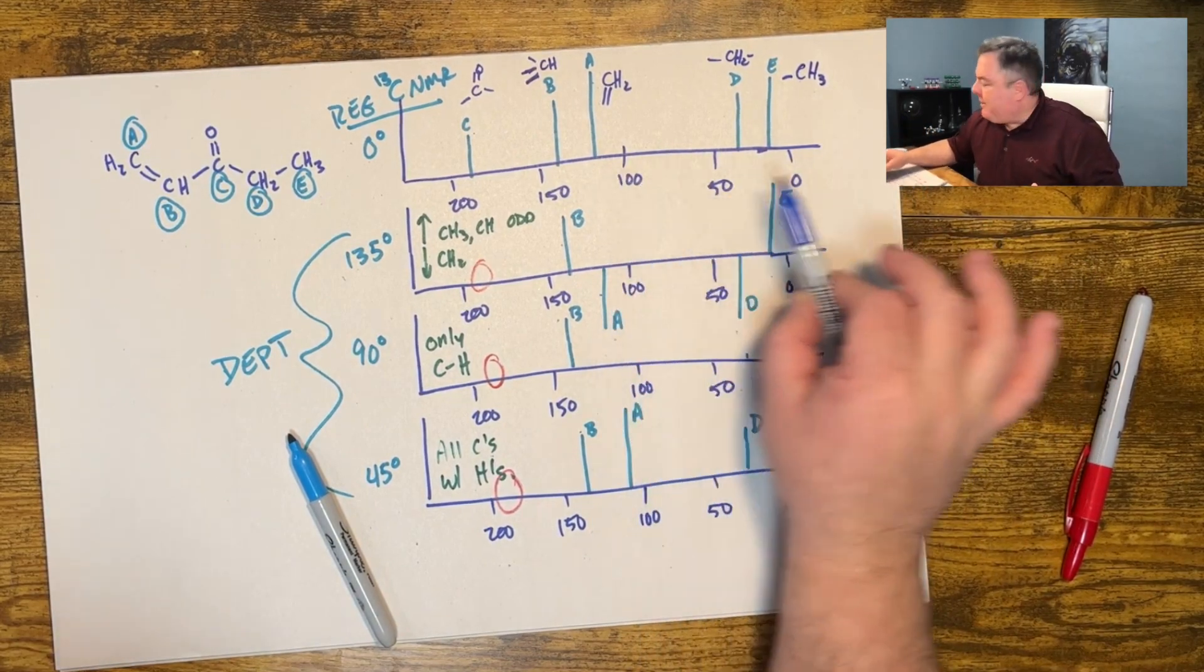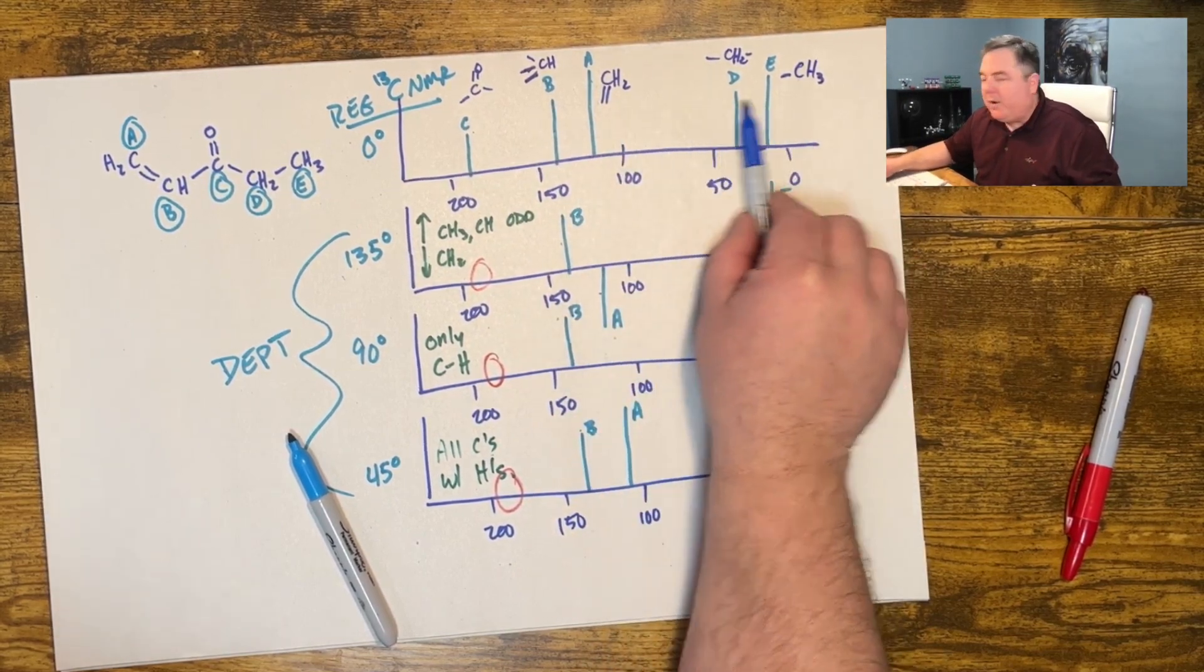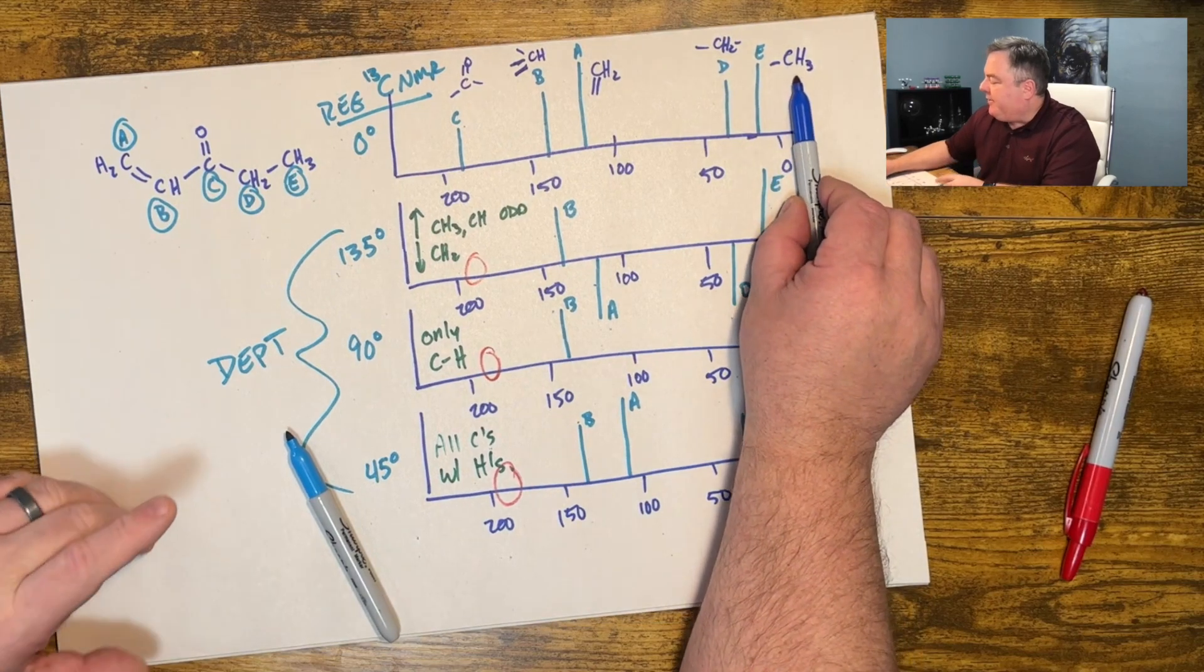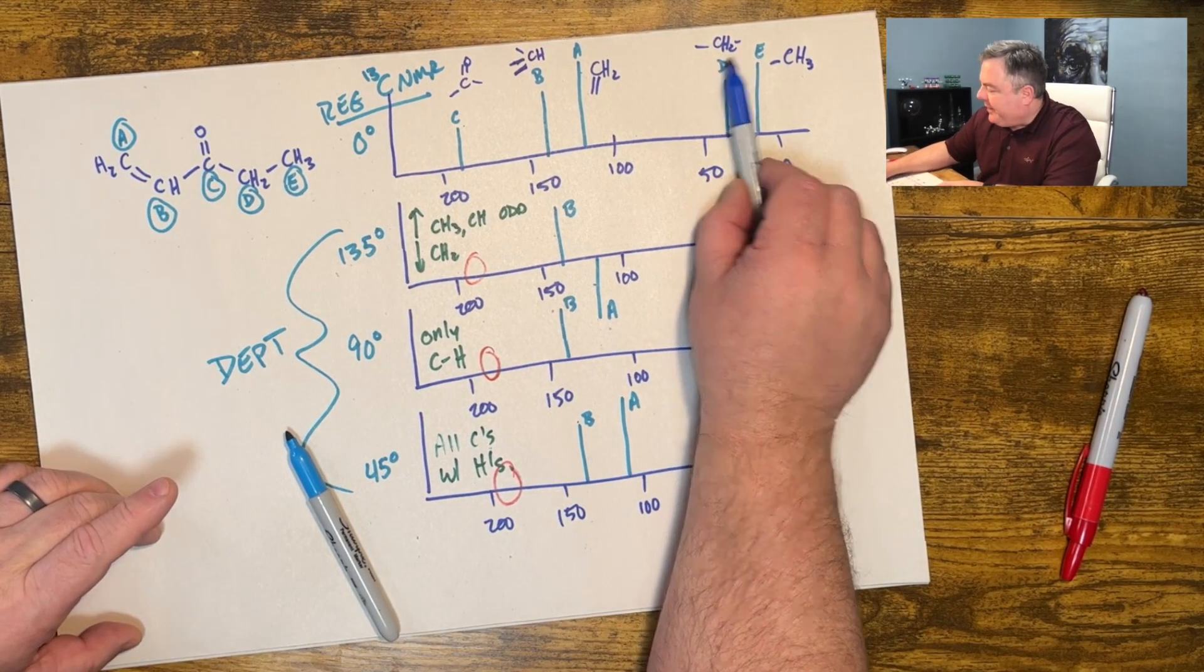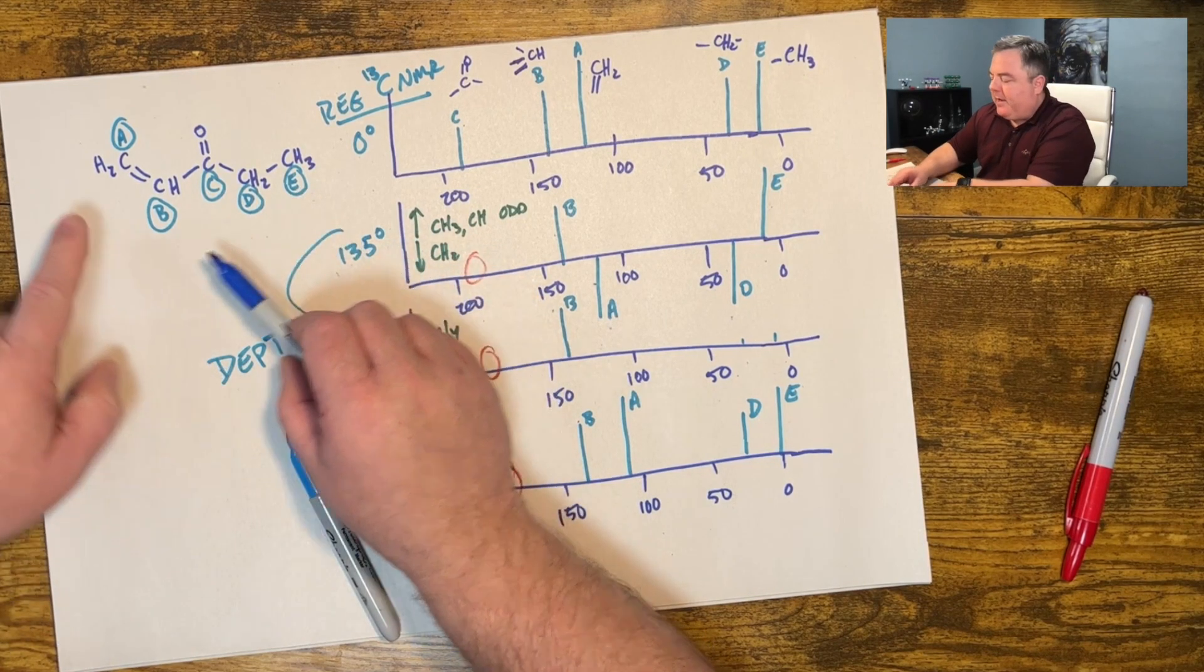So we have a methyl for E. Now I know every carbon atom, I know how many hydrogens are on it, I know if it's a carbonyl, if it's a double bond or a regular one. Now I can go to the hydrogen NMR and make sure this methyl and this ethyl, or this CH2 and CH3, are together by being a triplet quartet pattern.